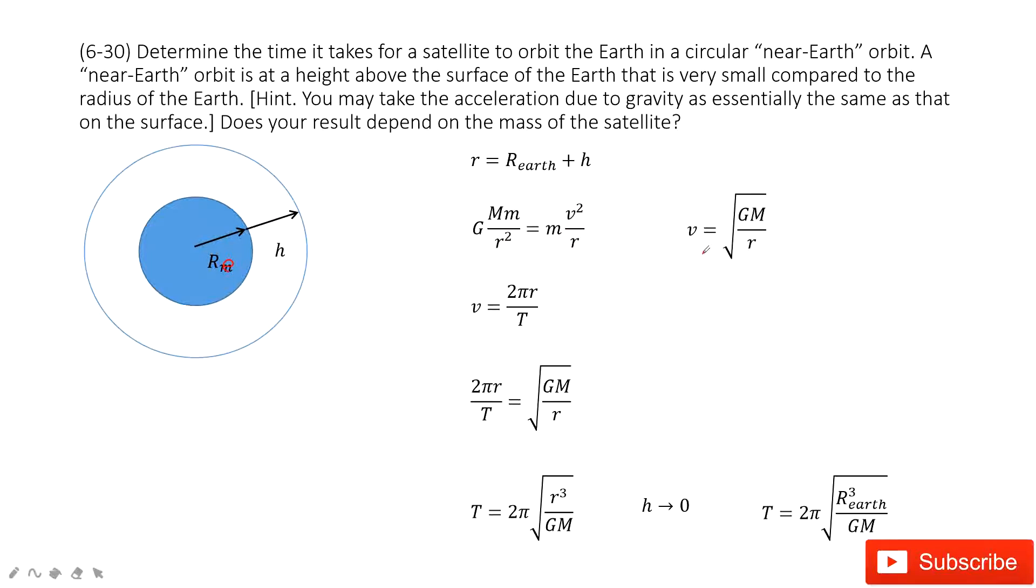In this one, we can solve this equation to find the velocity v, and it is the square root of GM divided by r. This velocity we can find. But also remember, we need to find the period. So we must connect the period with the velocity.